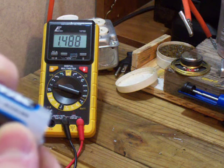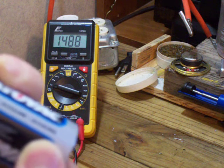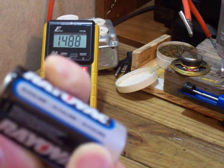As you see there, the meter is reading 1.488, which means this is a good D battery, and that is how you measure voltage.